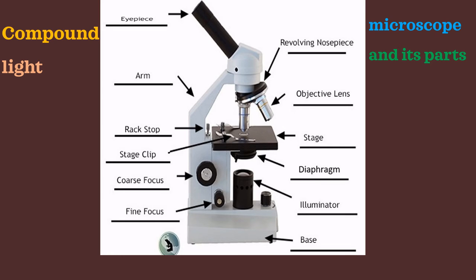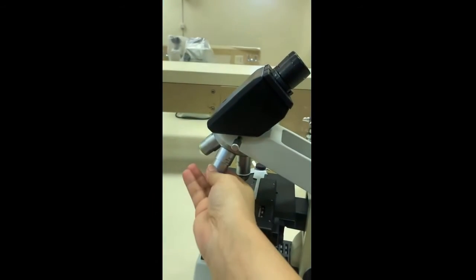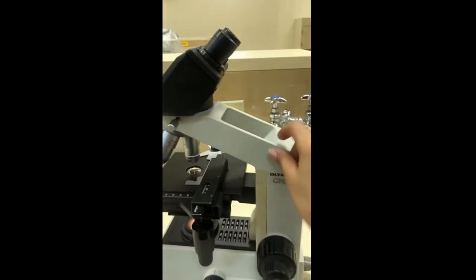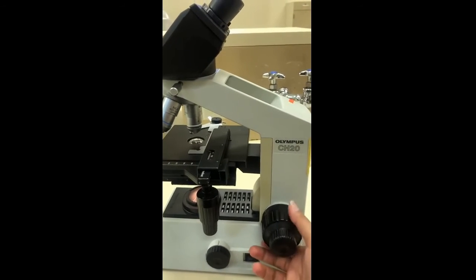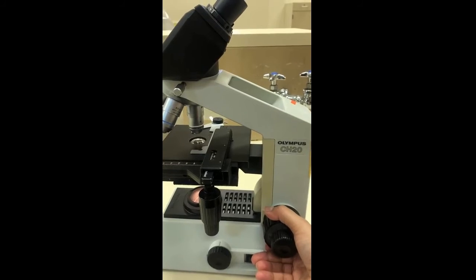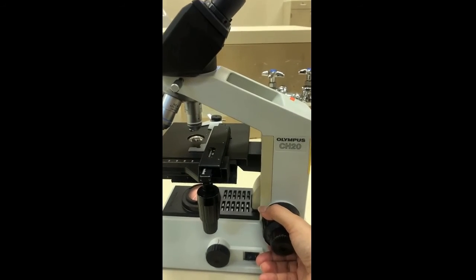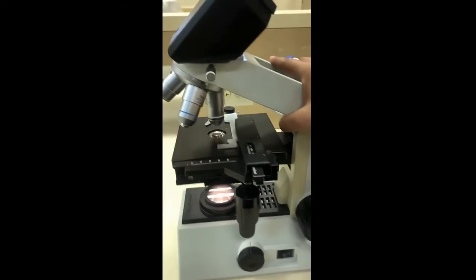Here is the eyepiece lens and the objective lenses. Here is the body tube, the arm, and here is the base. Then here is the light source, the coarse focus, and here is the fine focus, the smaller one. And here are the objective lenses.